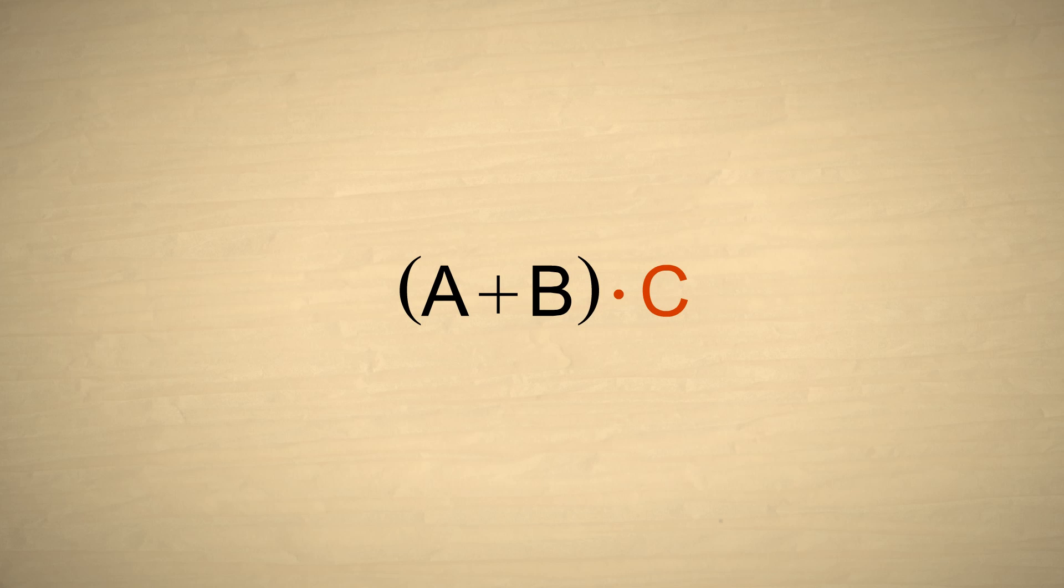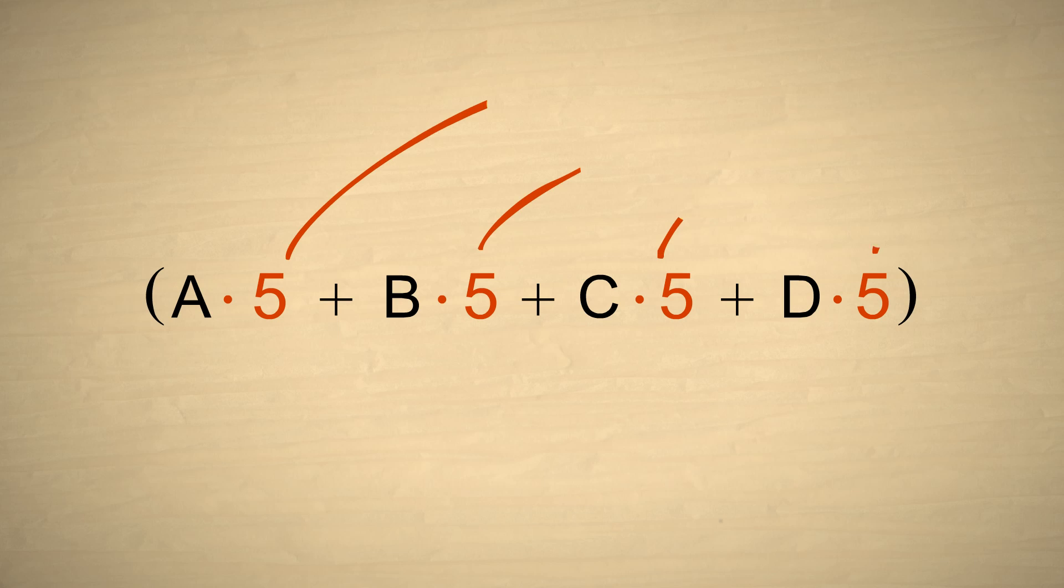The distributive property can be applied to any quantity of numbers which all have a common multiplier. For example, let's say that four numbers which we will call A, B, C, and D are all multiplied by five and then added. Then we can group these numbers as a sum in the parentheses and multiply the parentheses by the common multiplier 5.